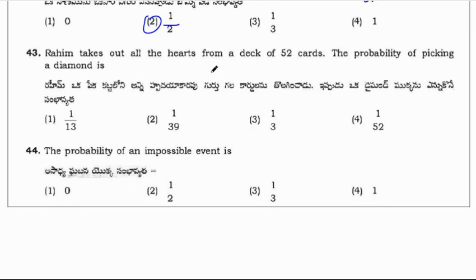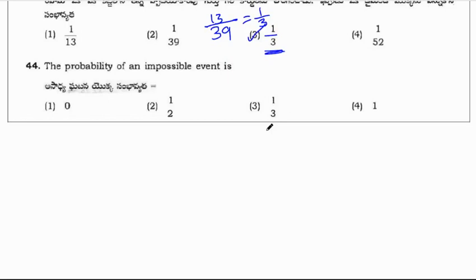Line takes out all the hearts from the deck of 52 cards. The probability of picking a diamond. So there will be 13 hearts in the deck of cards. So 52 minus 13, the remaining will be 39. So out of 39, the probability of getting a diamond, we will have 13 diamonds. So 13 by 39 is 1 by 3. So correct option is option 3, 1 by 3. The probability of an impossible event is impossible event 0.